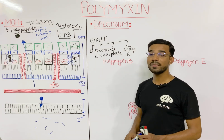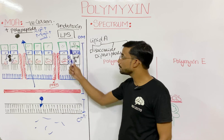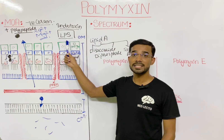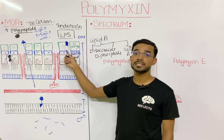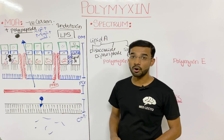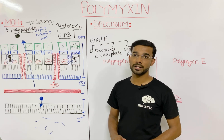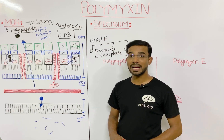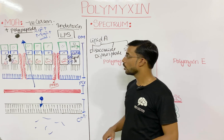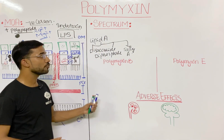Similarly, when gram-negative bacteria die, LPS is also released. Polymyxin is also helpful in the neutralization of the LPS component of dead gram-negative bacteria. This is the mechanism of action of polymyxin.